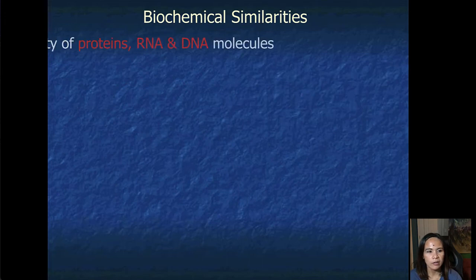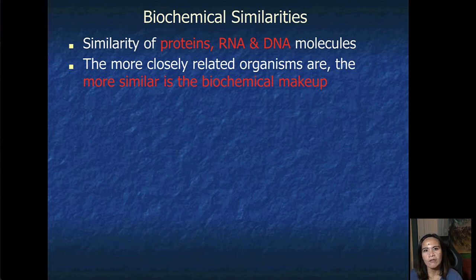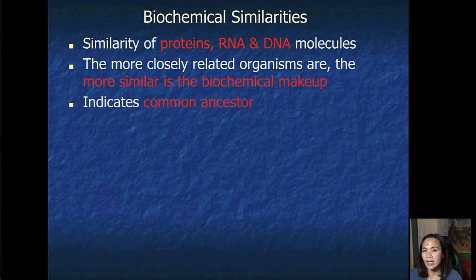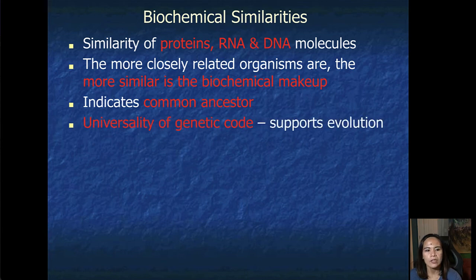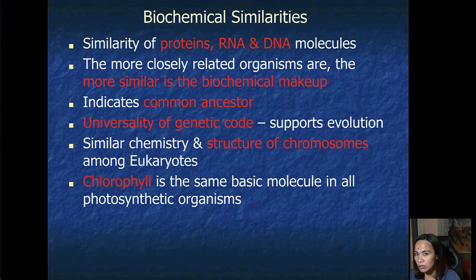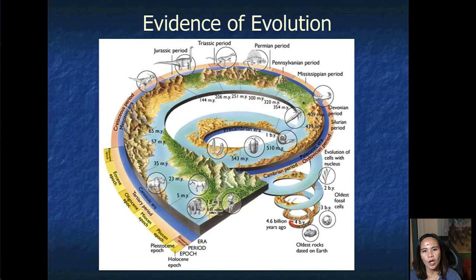How about biological similarities? The similarities of proteins, RNA, and DNA molecules can tell if the organisms are closely related, and the more similar their biochemical makeup, the more related they are, and it indicates common ancestry. Universality of genetic code supports evolution. Similar chemistry and structure of chromosomes among eukaryotes are pretty telling, and chlorophyll is the same basic molecule in all photosynthetic organisms. I hope it helps in understanding the different evidence of evolution, which is your fossils, your anatomical structure, embryological structure, and your biochemistry or your proteins and DNA similarities.